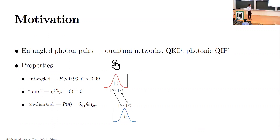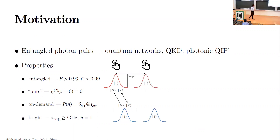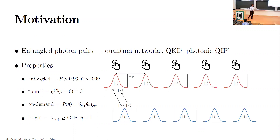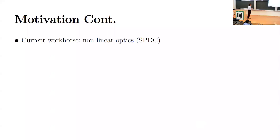The nice thing about quantum dots is that they allow you to do on-demand generation of light, which means every time you ask for an entangled photon pair you should get one at a well-specified point in time. Your source should also be bright, which means it has a fast repetition rate and high efficiency so you can get as much light out as possible. There are other properties that matter as well, such as indistinguishability, which we can discuss later.